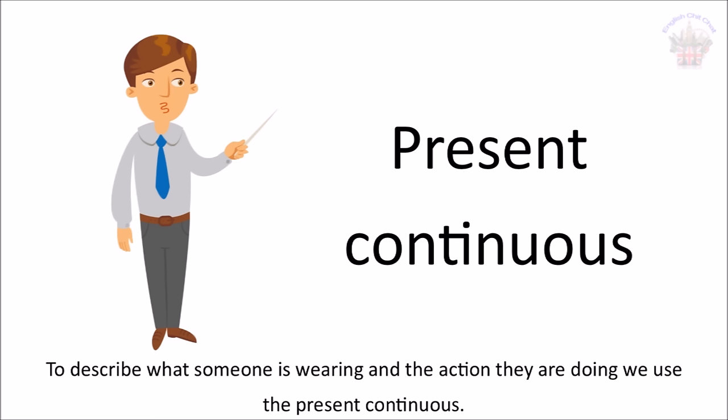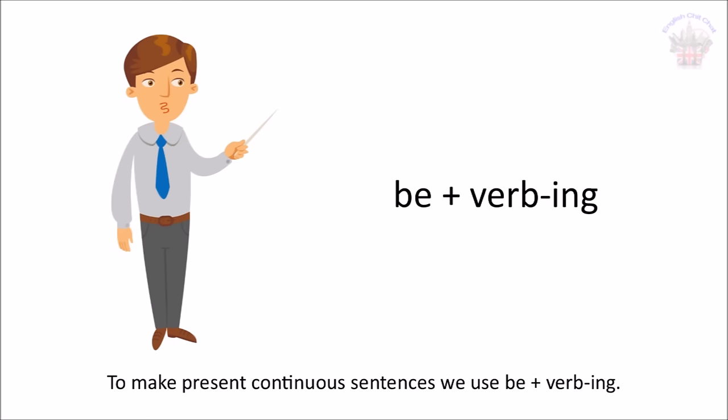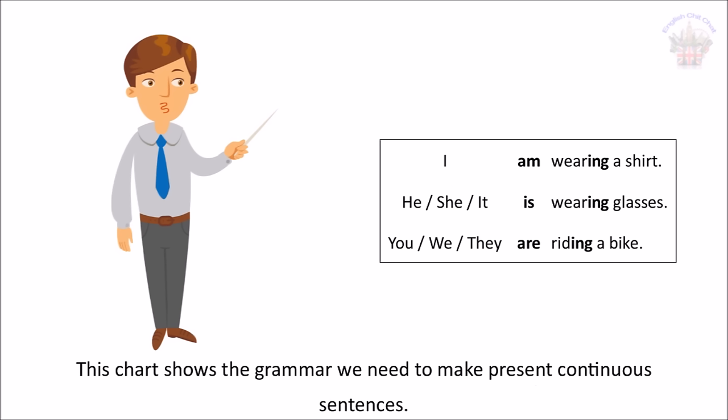To describe what someone is wearing and the action they are doing, we use the present continuous. To make present continuous sentences, we use be plus verb-ing. This chart shows the grammar we need to make present continuous sentences. I am wearing a shirt. He is wearing glasses. You are riding a bike.